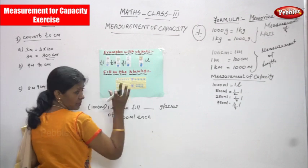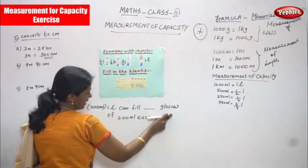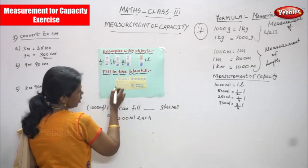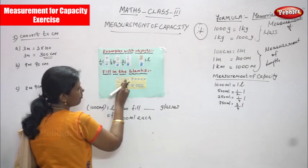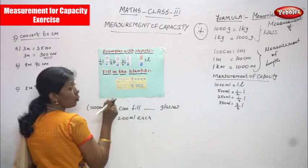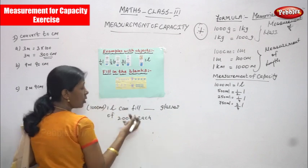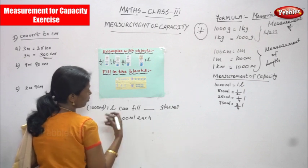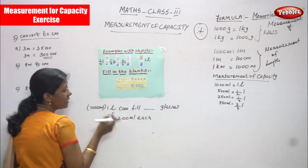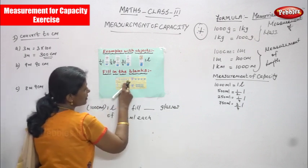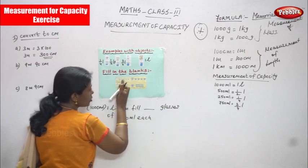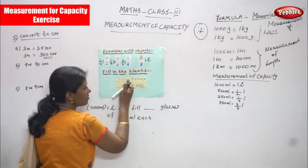One liter can fill dash glasses of 200 ml each. So these each glasses — how many glasses? 1, 2, 3, 4, 5 glasses. These 5 glasses fill 200 ml of water or milk — anything you can take. 200 ml of water or 200 ml of milk each. That means how many glasses? So 1 glass, 2 glass, 3 glass, 4 glass, 5 glass.